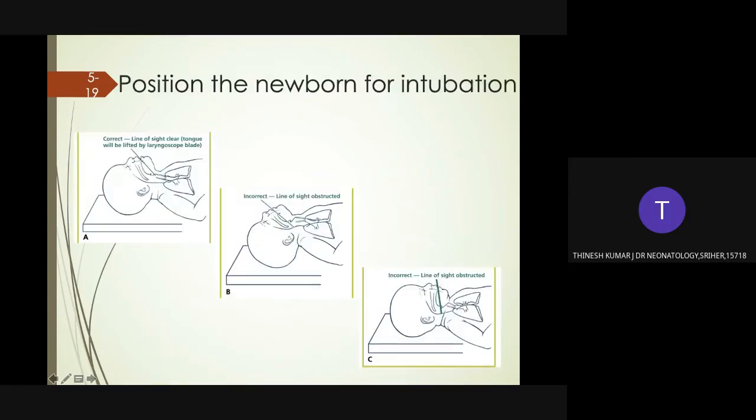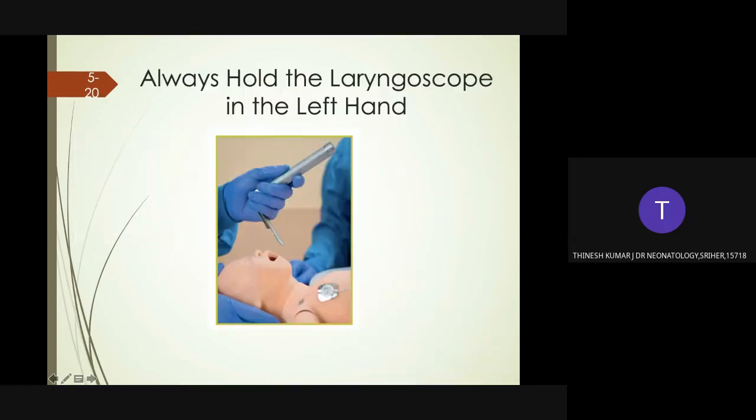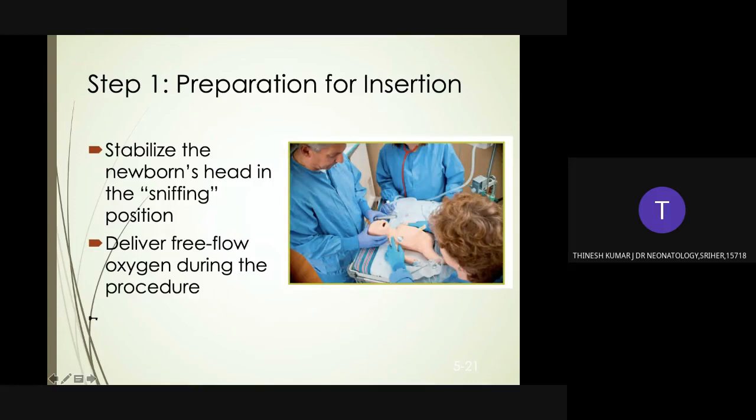For intubation, the line of sight must be clear. The tongue is lifted by the laryngoscope blade, and the airway should be in a straight line so the vocal cords are visible. If too extended, it will obstruct the airway. Always hold the laryngoscope in the left hand, irrespective of handedness.